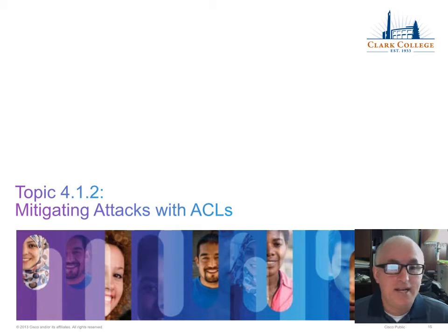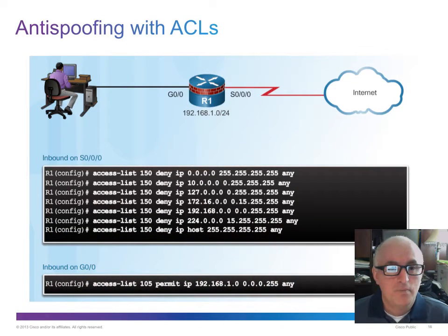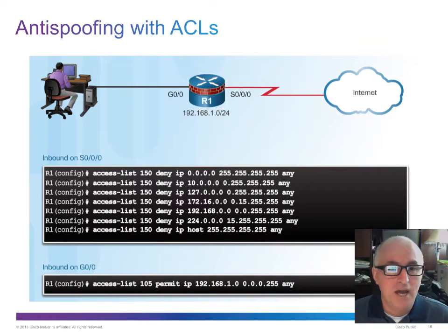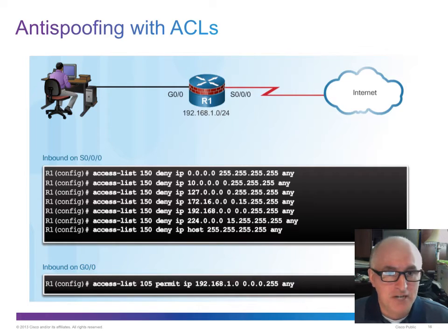Let's talk about how we can mitigate attacks using ACLs. Here's an example of anti-spoofing with ACLs — it's blocking a number of IP address ranges. You can see this is going on the inbound of G0/0, so the attacker is going to be prevented from using any of those IP ranges listed, basically limiting the IP addresses he could spoof or change.